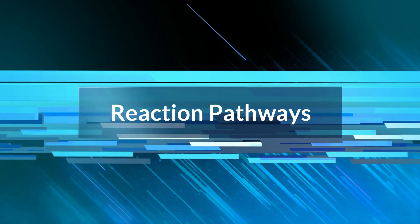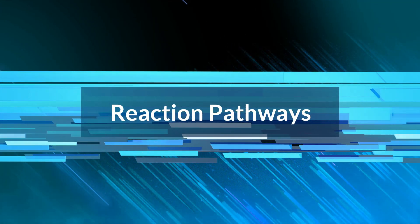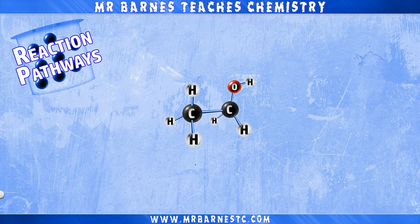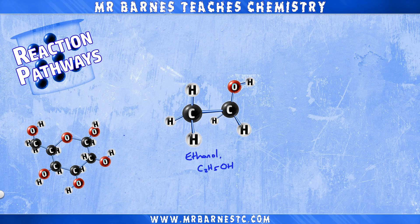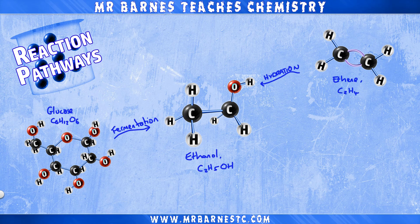Hi guys, welcome to this video looking at reaction pathways. We're going to use ethanol C2H5OH as an example. Ethanol can be produced by either fermentation of glucose, C6H12O6, or by hydration of ethene, C2H4.